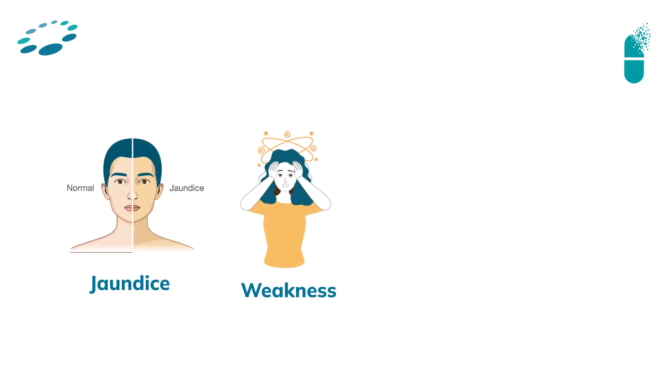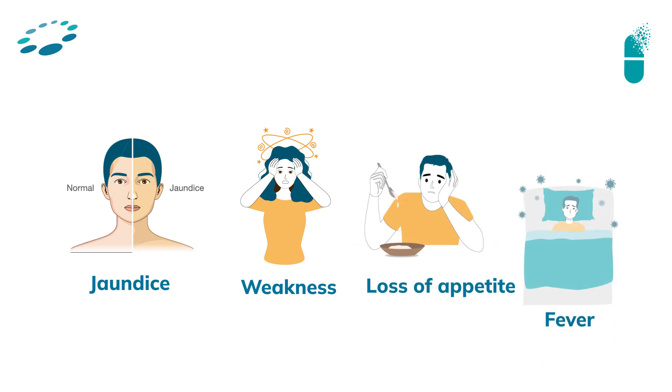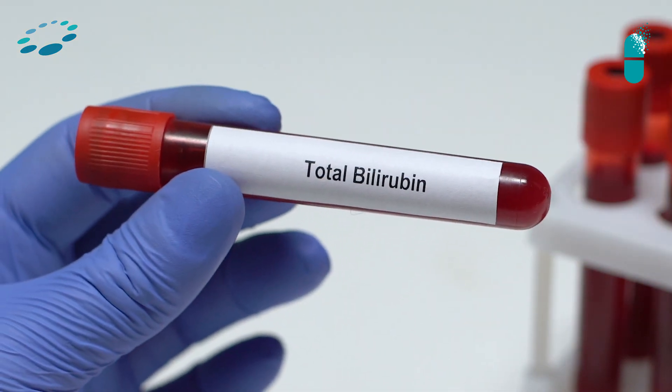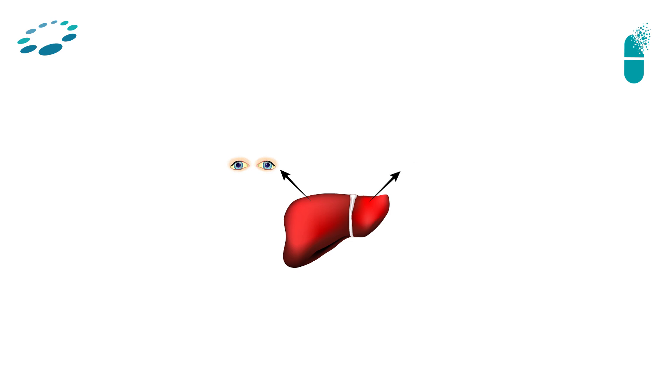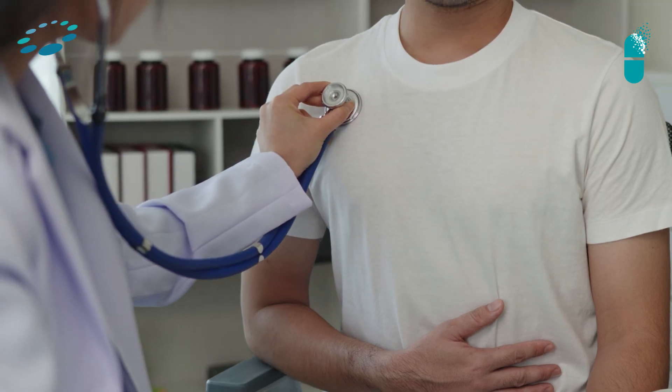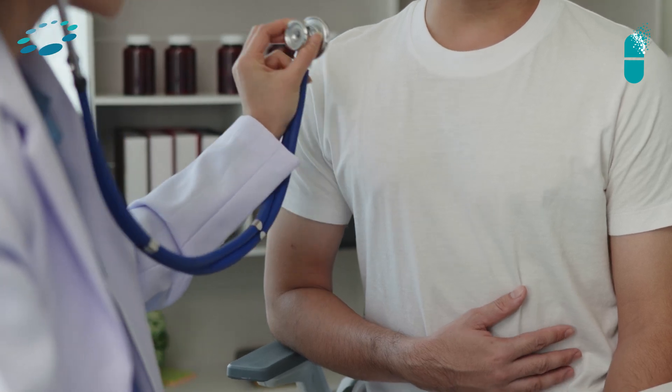If it spreads, initially people may have jaundice, weakness, loss of appetite, and fever. If bilirubin goes high — more than three — there can be yellowish discoloration of the eyes, skin, and urine. It is always better to come see us so we can assess at which stage you are. Generally, hepatitis A and E are self-limiting, meaning your own immunity can bring down and eliminate the virus.